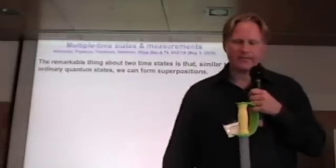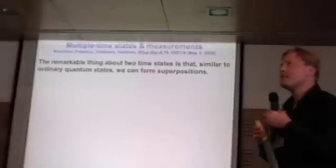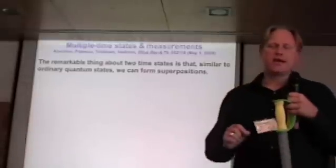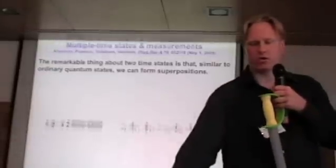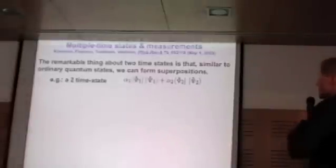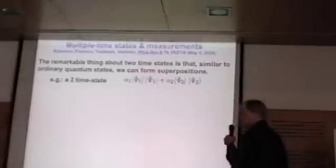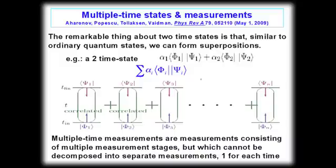But I want to now apply this to something we call multiple-time states in multiple-time measurements. So the first observation is that these two vectors can be superposed, just like you superpose ordinary quantum mechanical states. So here's an example. Here's what's called a two-time state. Let me give you a graphical representation of it. Here's a generalized state that has many different superpositions.